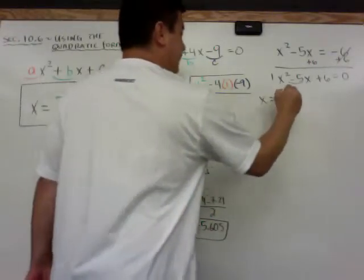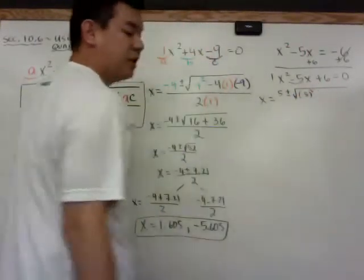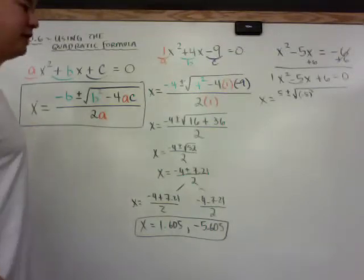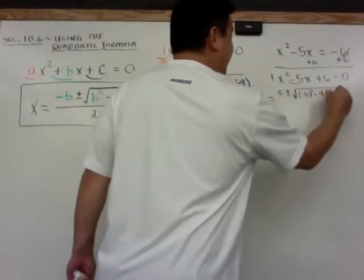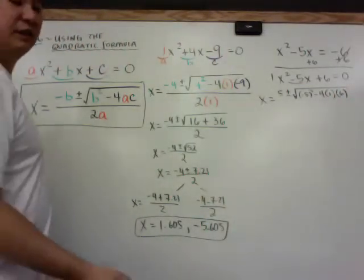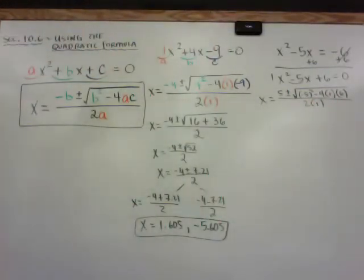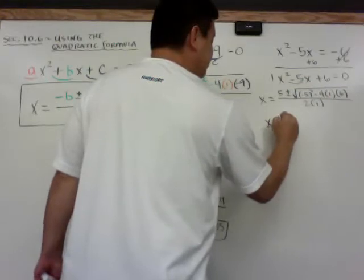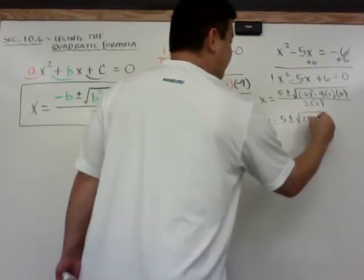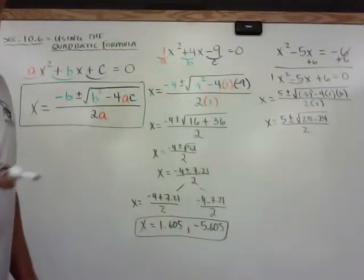Negative b plus or minus the square root of b squared. And when I put this in, I want to make sure I put the parentheses around the negative 5 so it becomes a positive 25 when I square it. Minus 4 times a times c, all over 2a, which is 2 times 1. I'm going to simplify the radical. x is equal to 5 plus or minus the square root of 25 minus 24 all over 2. I can see that 25 minus 24 is 1.